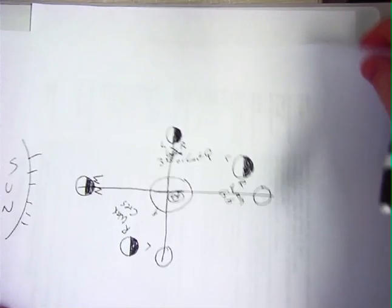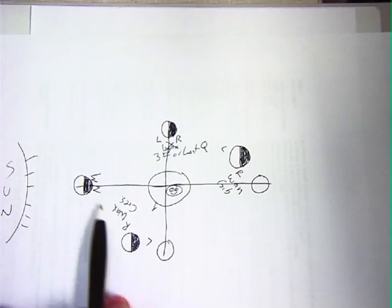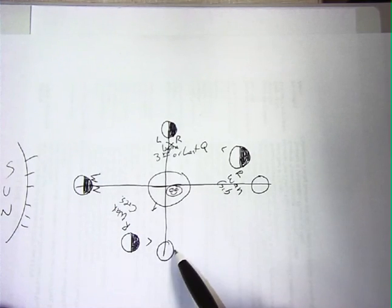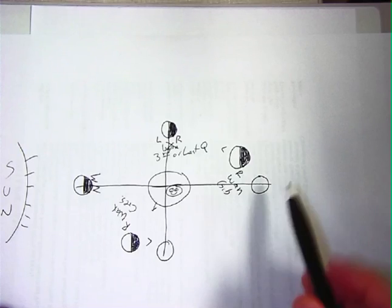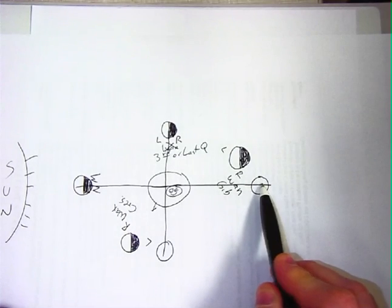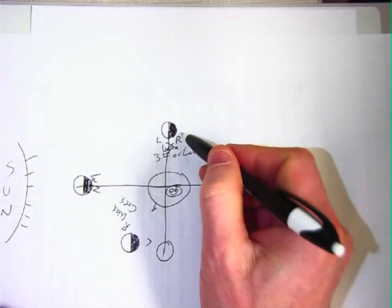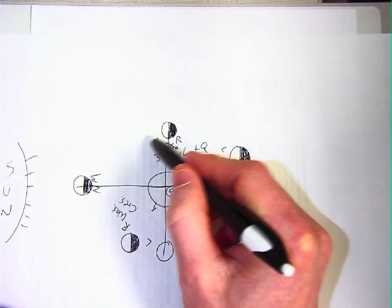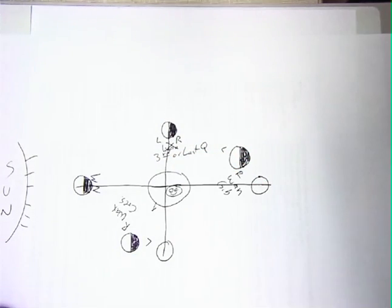You know, once you get good at it, you know it's going to go new moon, waxing crescent, first quarter, waxing gibbous, full moon, waning gibbous, last quarter or third quarter, and then waning crescent. Just like the song goes,